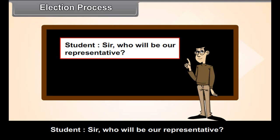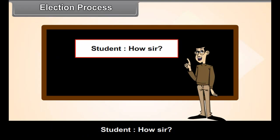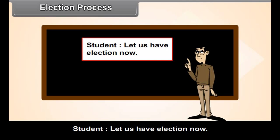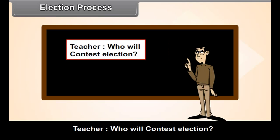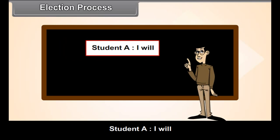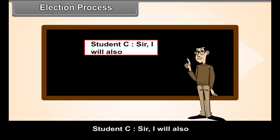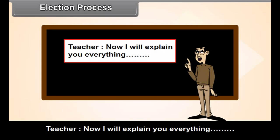Student: Sir, who will be our representative, and how? Teacher: You all will vote, and the student who gets the maximum number of votes will be declared as your representative. Student: Let us have an election now. Teacher: Who will contest the election? Students A, B, and C each volunteer.